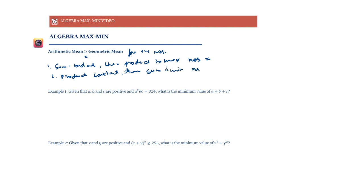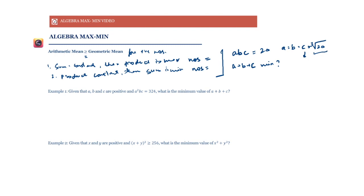For example, if we have three numbers a, b, c and their product is 20 — a constant product — the sum a+b+c is minimum when a = b = c = ∛20. The minimum value of a+b+c is then 3·∛20. The numbers need to be positive but do not need to be integers.